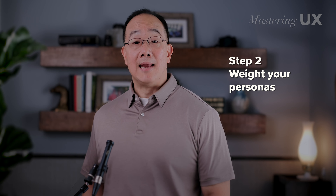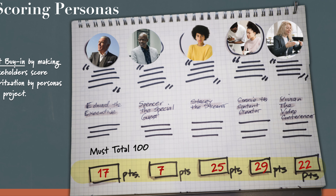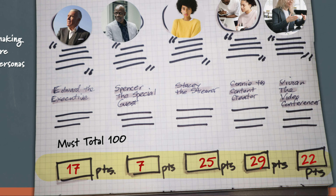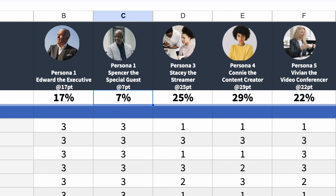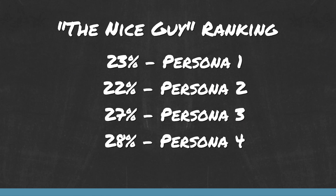Step two: weight the personas. With the business stakeholders all in the same room, we allow each person to vote by assigning a weight to each persona based on their importance to the project. The weights for all personas add up to 100%. Something important I've learned the hard way is that stakeholders have a strong tendency to give everyone an average weight — for example, with four personas, they might put 23%, 22%, 27%, and 28%. I try to remind stakeholders that if a persona is fully satisfied and would make a huge product success, don't be afraid to give that persona 50% or more weighting.